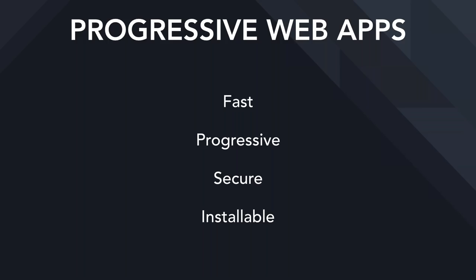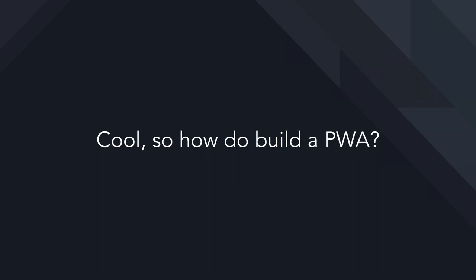The last key point is that a progressive web app should be installable. If a user is frequently visiting your website, they should be able to install it to the home screen of their device and have a better, more integrated experience with that web app without having to go through an app store and download a whole separate app.